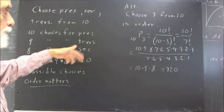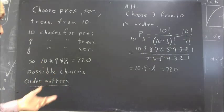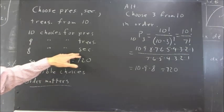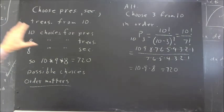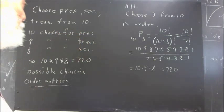We could choose them in a different order as long as we specify what order. This could be secretary, this could be president, this could be treasurer. But the point is, when we decide in which order we're going to choose these people, who we're going to choose in which order,